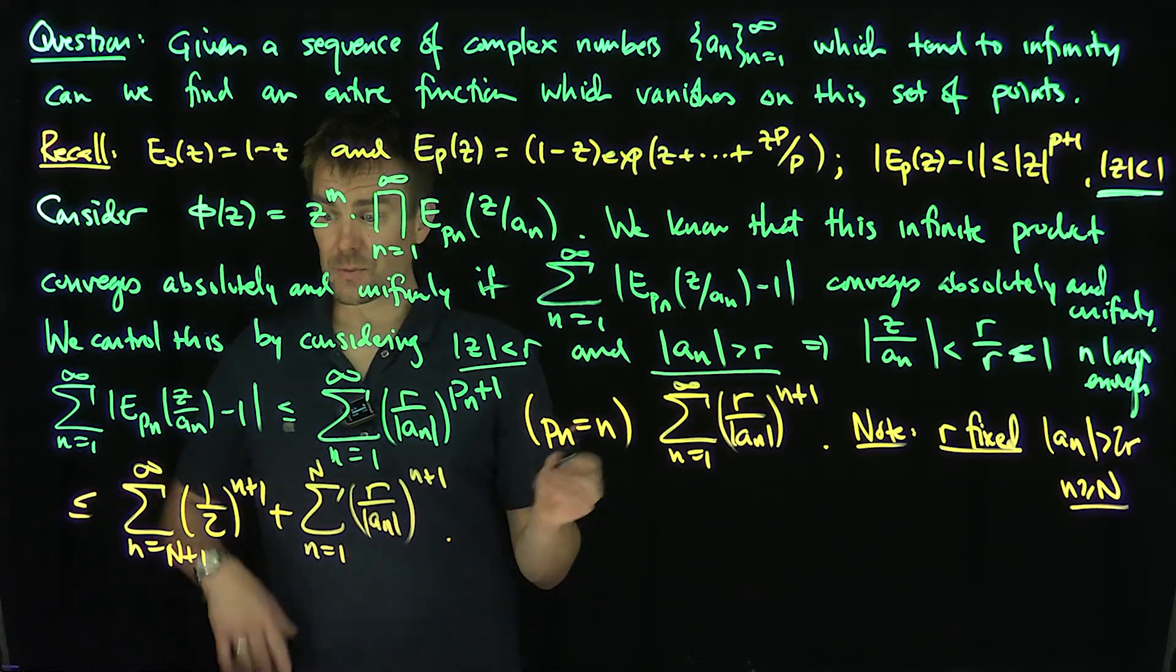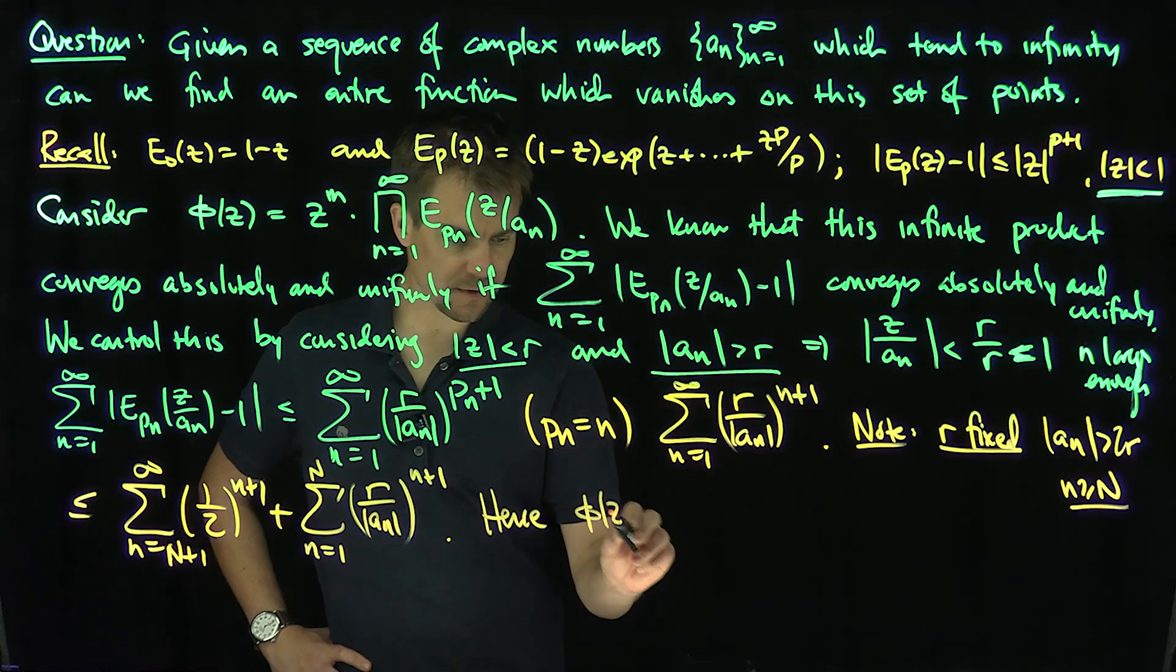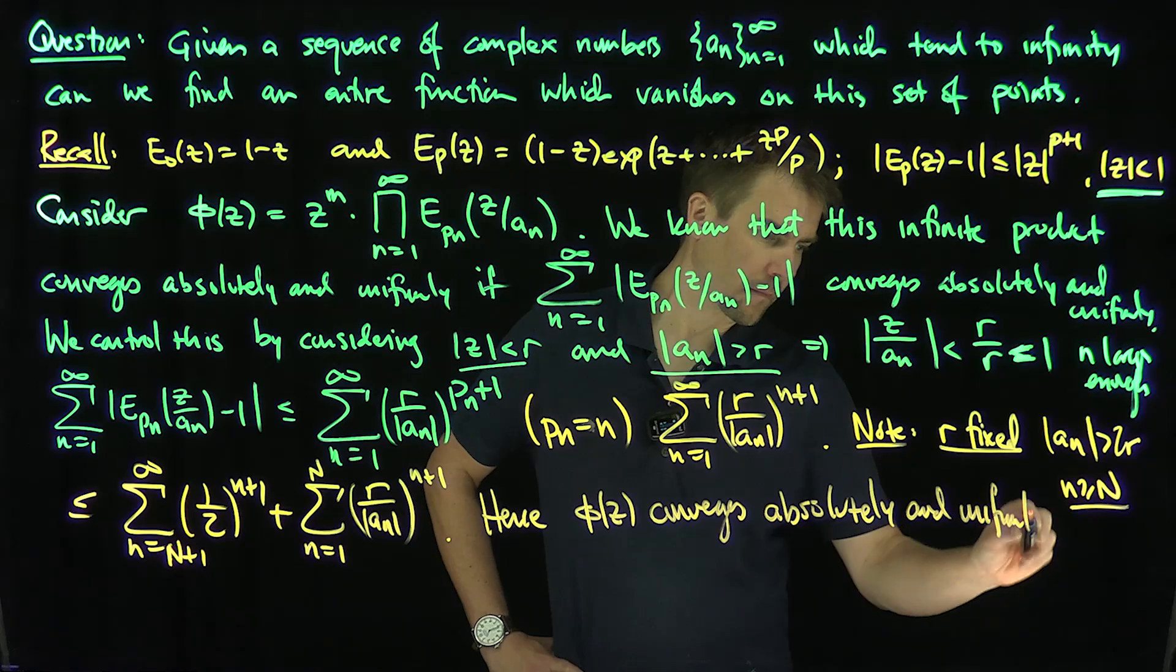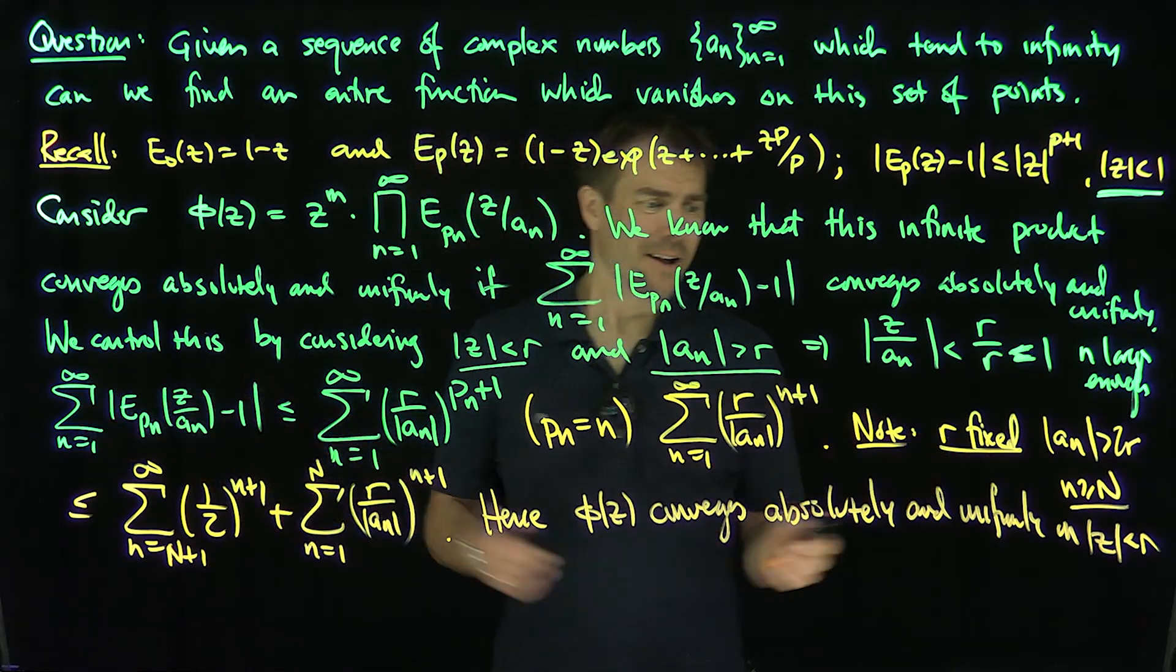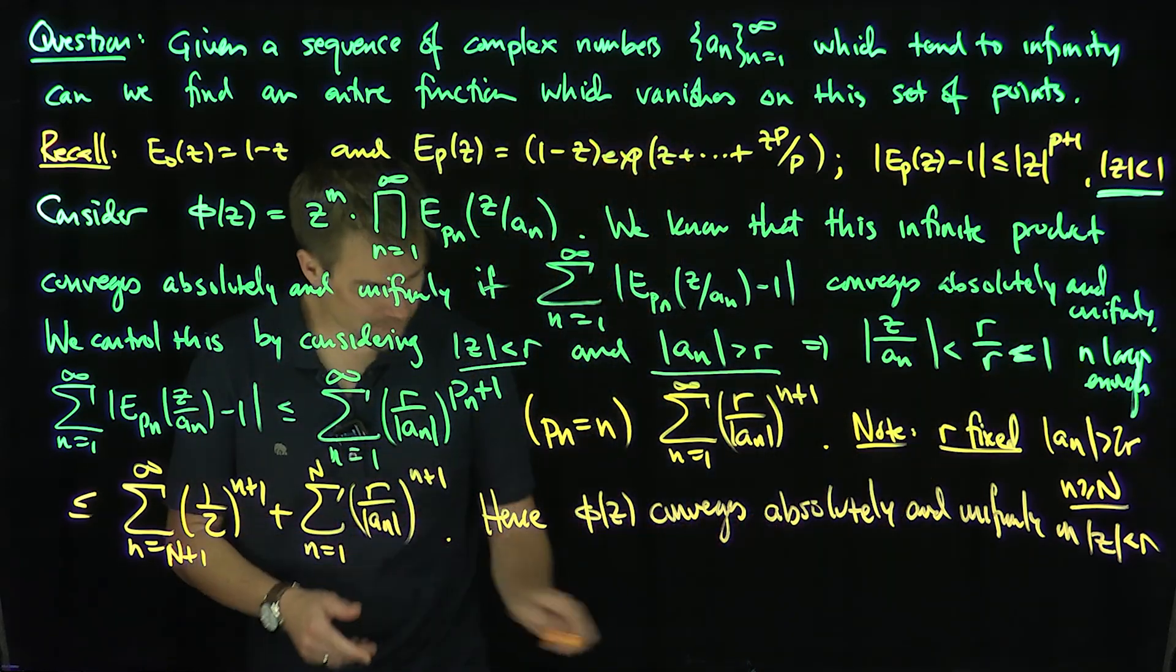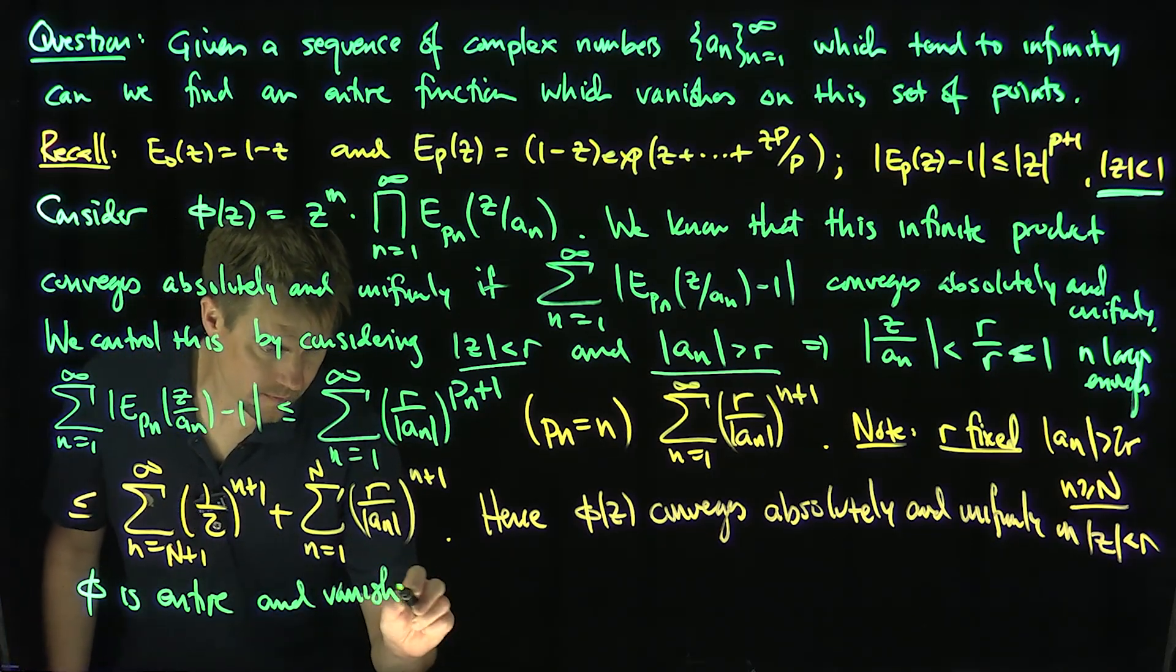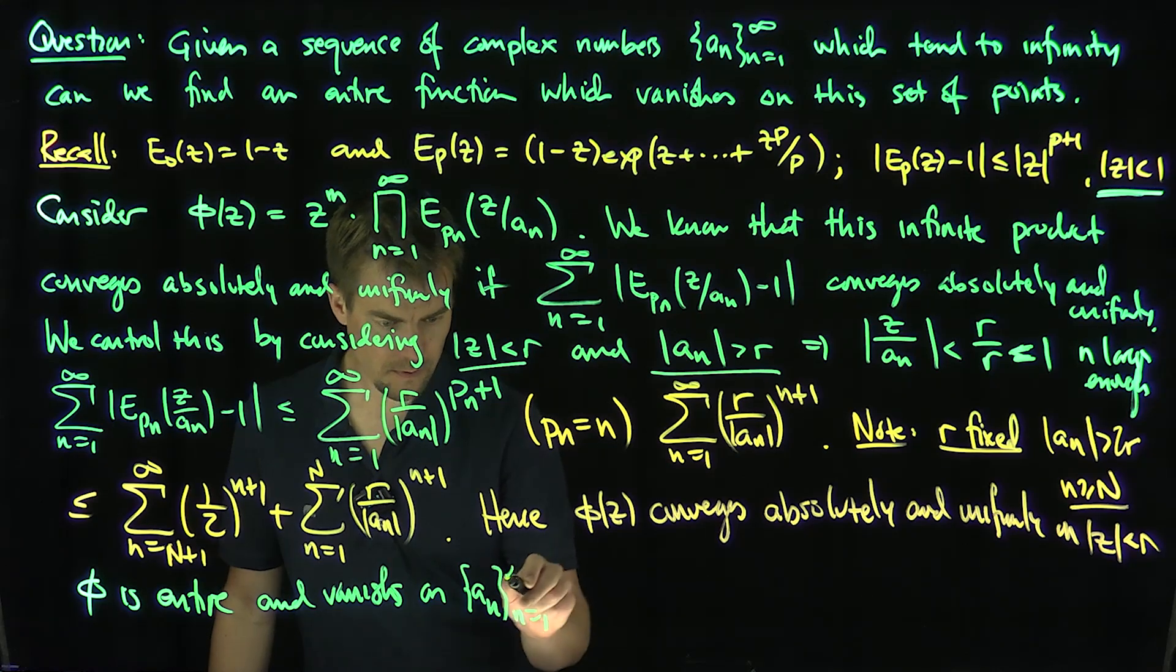This is uniformly converging. This converges, it tells me that our series converges absolutely uniformly, so our product converges. Hence, phi converges absolutely and uniformly on modulus of z less than r. Little r is arbitrary, it could have been anything. I can run this scheme for any value of r. It's holomorphic on every disk, therefore it's entire. So phi is entire and vanishes on a_n and zero.